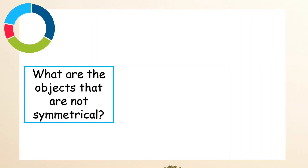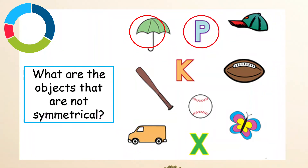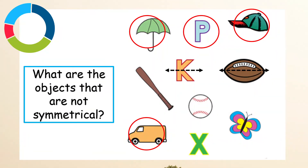What are the objects that are not symmetrical? The umbrella is not symmetrical. The letter P is not symmetrical. And the cap is not symmetrical. The van is not symmetrical. And the rest of the objects are symmetrical. Let's take a look — the letter K, the football, we can draw the line of symmetry in the middle. The baseball, the letter X, the butterfly, and the baseball bat — these are symmetrical.